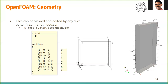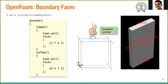After defining the geometry, we need to identify the faces. The faces are needed to specify the boundary conditions. In the same file block mesh dict, scroll down to the section which defines the object called boundary. The boundary has a list of surfaces: top wall, left wall, right wall, and so on. The name of the surfaces can be any string. Inside each surface, we have to identify a list of faces from the object and identify its type.